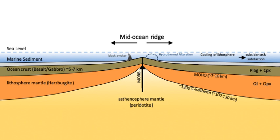New magma of basalt composition emerges at and near the axis because of decompression melting in the underlying Earth's mantle. The isentropic upwelling solid mantle material exceeds the solidus temperature and melts. The crystallized magma forms new crust of basalt known as MORB—mid-ocean ridge basalt—and below it in the lower oceanic crust, Gabbro. Mid-ocean ridge basalt is a tholeiitic basalt and is characteristically low in incompatible elements.